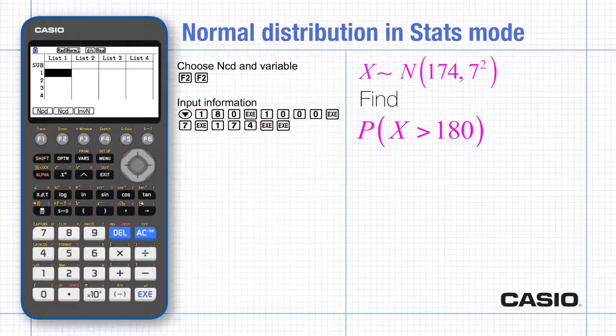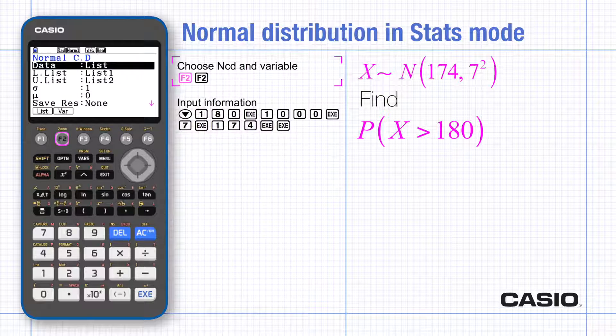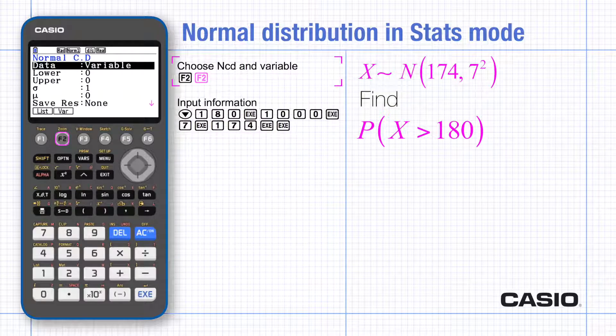If the interval you want is open like this one, choose an arbitrary very large boundary value. I'm going to use the interval 180 to 1000. Choose F2 and variable and input the boundary values.